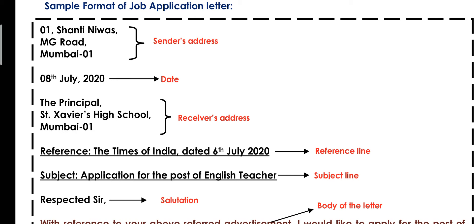Then we will leave one line and write the receiver's address. The receiver's address is the position of the person — for example, the manager, the editor, or the principal, along with the name of the school, newspaper, or company. Here I have written: The Principal, St. Xavier's High School, Mumbai 01. There is no need to give the address in excessive detail.